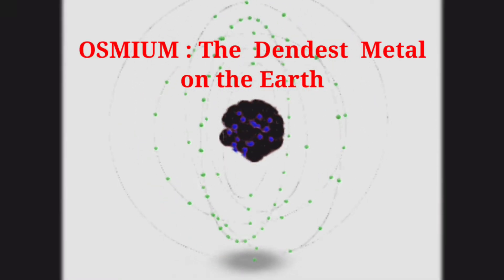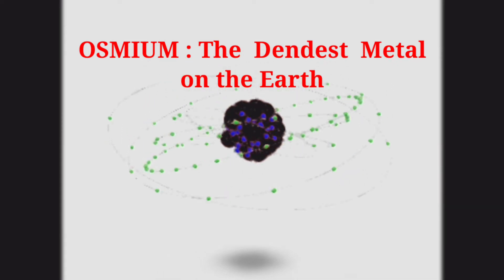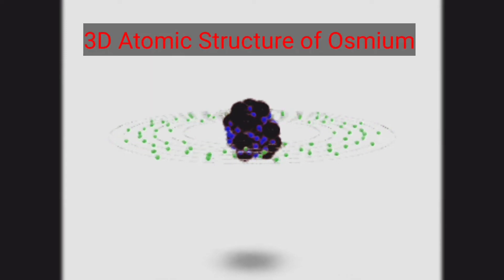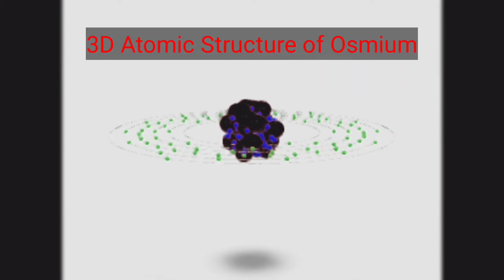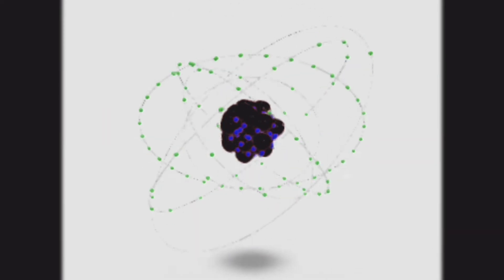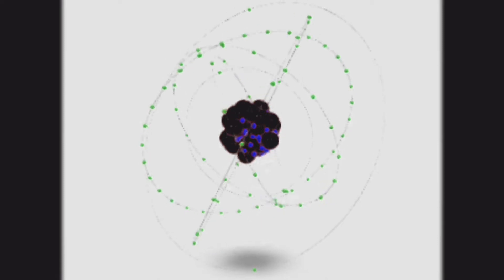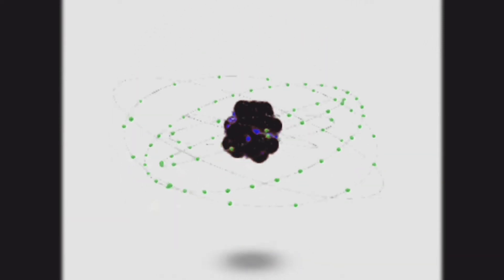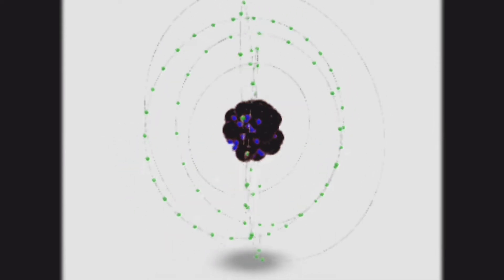Hello friends, today we will learn about osmium, which is the densest metal on Earth. The nucleus consists of 76 protons and 116 neutrons. 76 electrons bind to the nucleus, successively occupying available electron shells. Osmium is a transition metal.